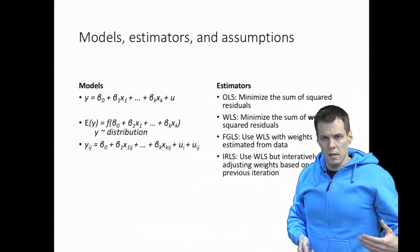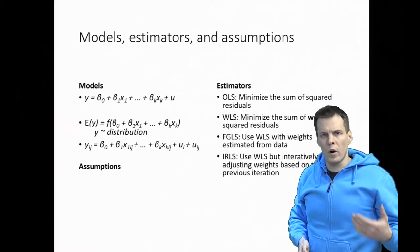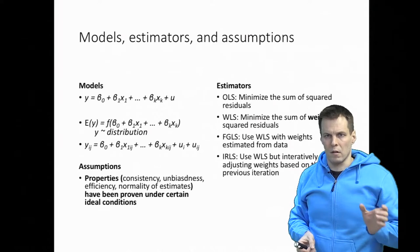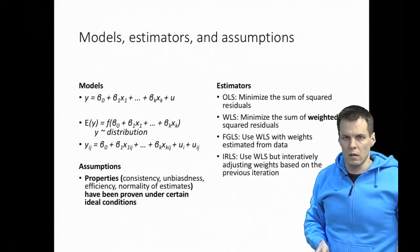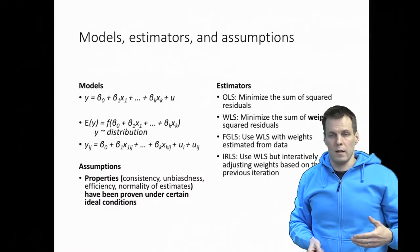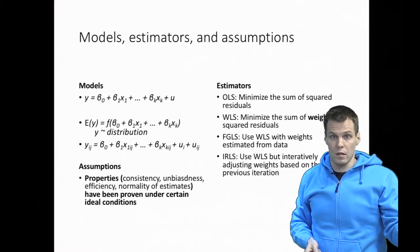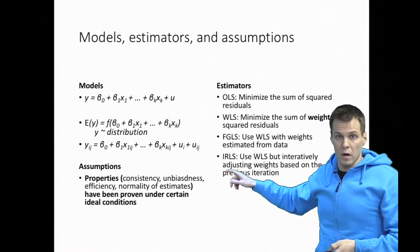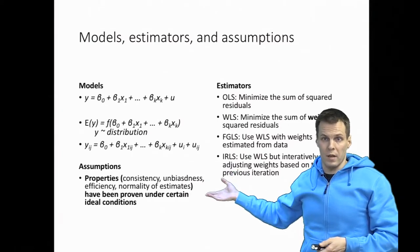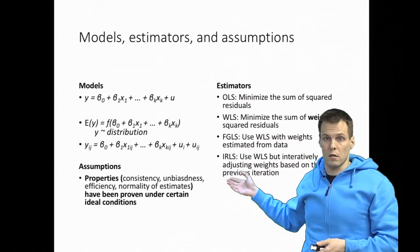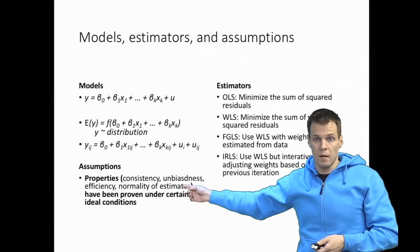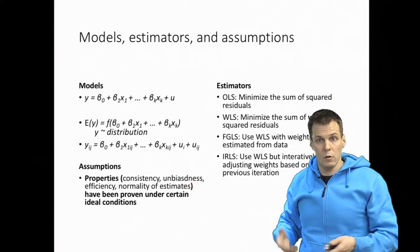Assumptions are required for certain proofs. When we say OLS requires that the error term is normally distributed, it means it has been proven that OLS is consistent, unbiased, efficient, and normally distributed when — among other assumptions — the error term is normally distributed. If certain assumptions don't hold, the proof cannot be completed. So if the error term is not normally distributed, we cannot prove that the OLS estimator is unbiased in small samples — it could still be true, but we can't prove it.